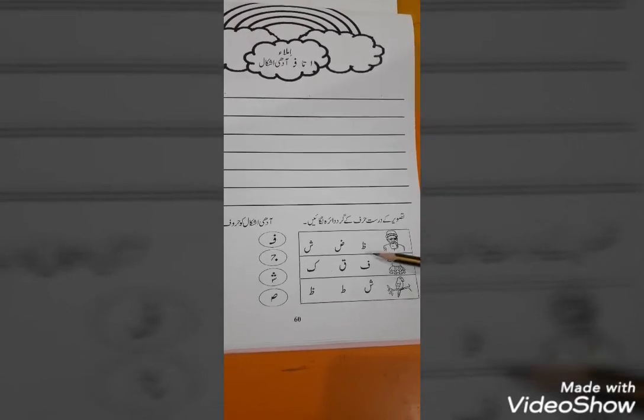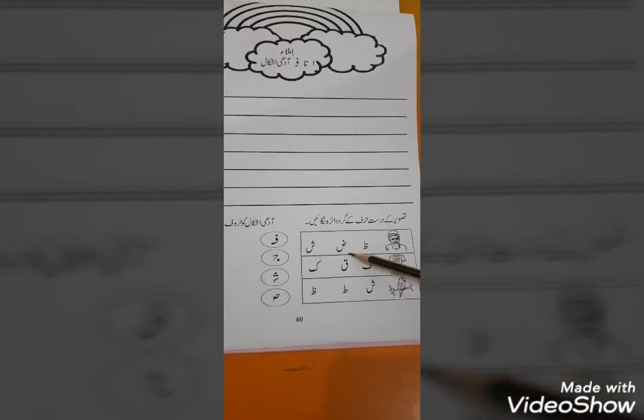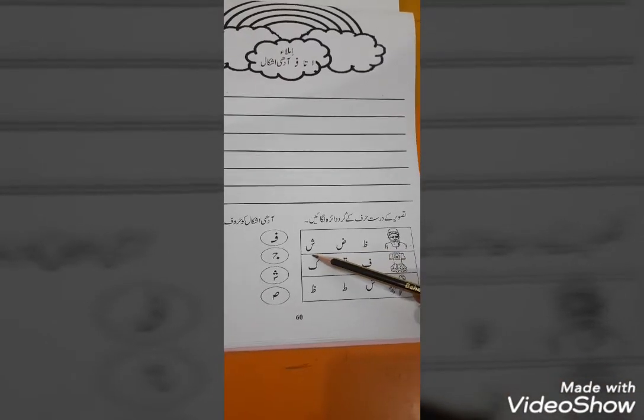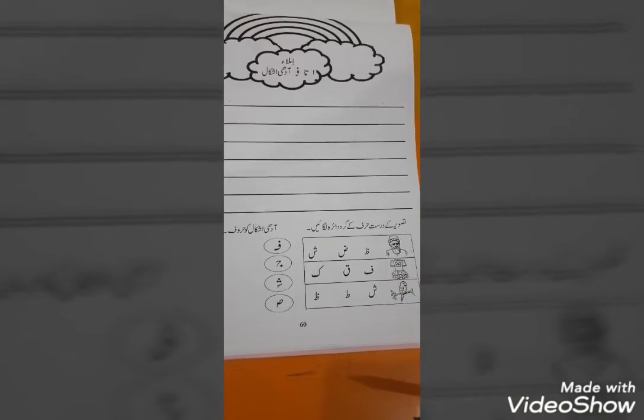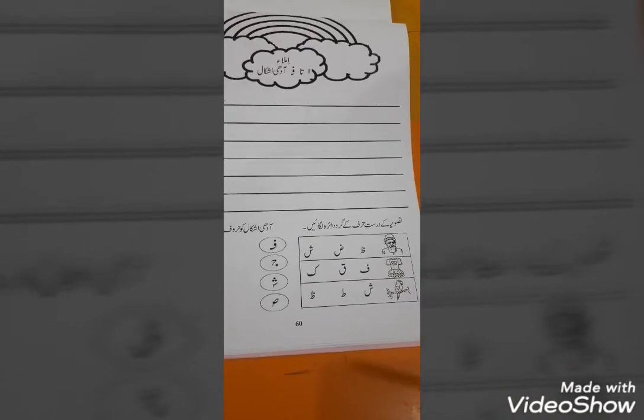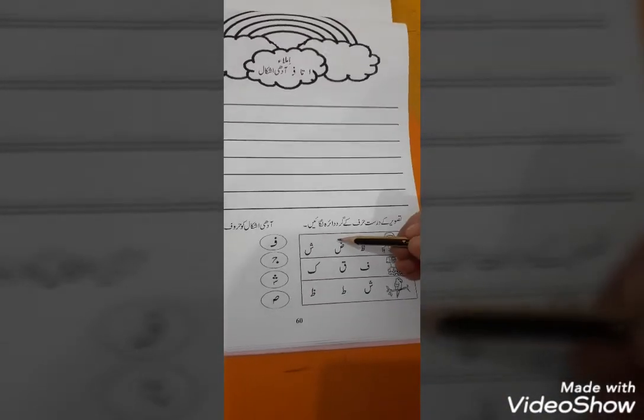Now, read this harf with me. Zaheer. Koon se harf se start hata hai? Zaheer se, Zaheer se ya Sheen se. Can you guess? Yes, Zaheer. So, you have to circle this Zaheer.